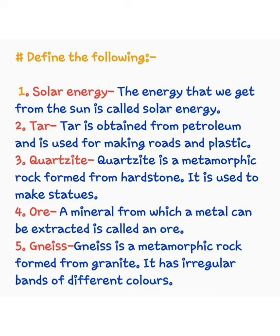Number 4, ore. A mineral from which a metal can be extracted is called an ore. वो mineral जिससे हमें metals निकालते हैं उसे हम ore कहते हैं। Number 5, gneiss. Gneiss is a metamorphic rock formed from granite. Gneiss जो एक metamorphic rock है जो कि granite से प्राप्त होता है, and it has irregular bands of different colors. इसमें different color के irregular bands होते हैं।